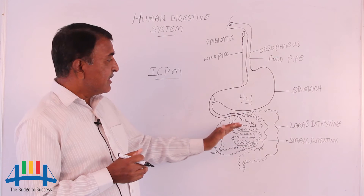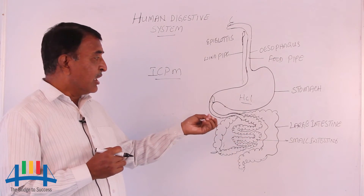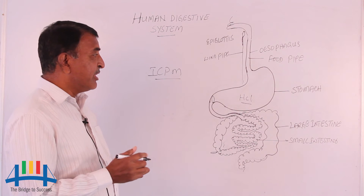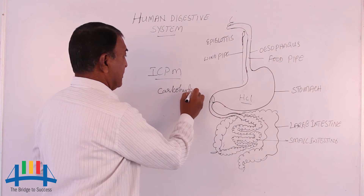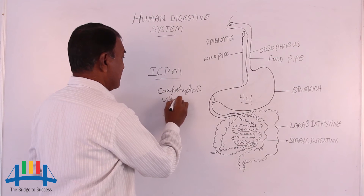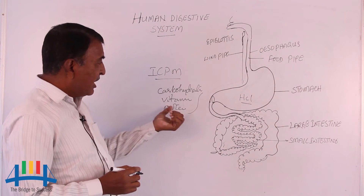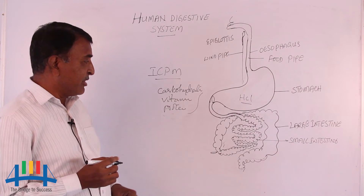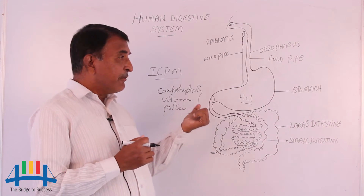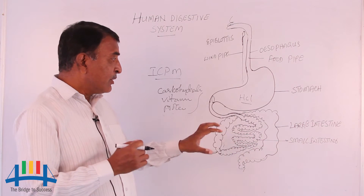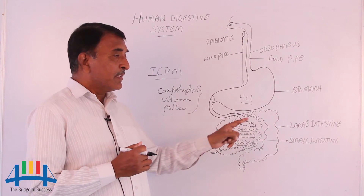Whenever soft food enters into the small intestine, the small intestine — which we know is six meters in length — absorbs food materials. Why is it six meters long? Because as we take food, we need to absorb carbohydrates, vitamins, and proteins. The vitamins include A, B, C, D, E, K, and B-complex vitamins B1, B2, B3, B6, B12. All these things are required by our body system, which is why the small intestine is six meters in length.